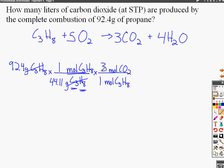I use the one to three ratio from the balanced equation. The three carbon dioxide and the one propane. The one's not written in there, but it is implied. The moles of propane will cancel out and I'm left with moles of carbon dioxide.